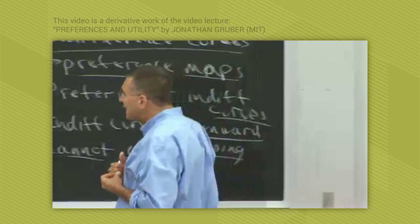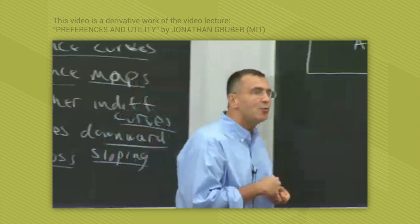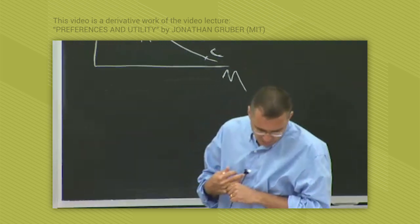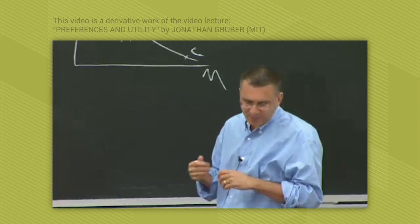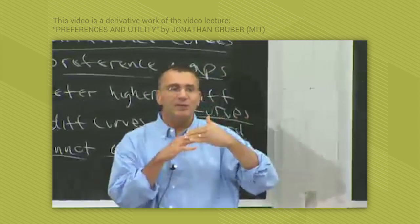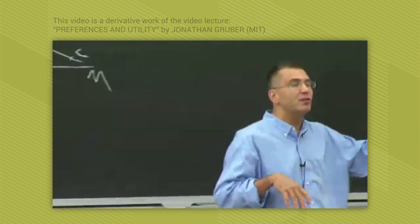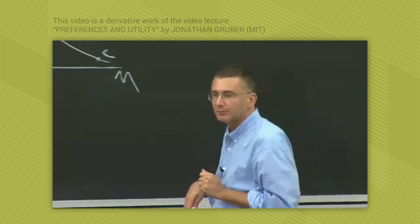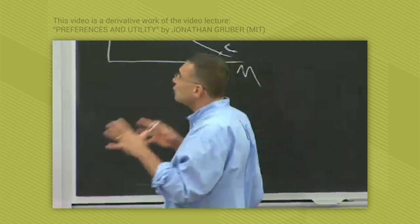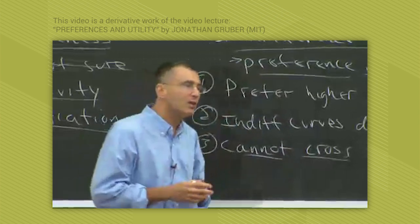And finally, completeness, which is the most awkward of these assumptions, simply means you can't have more than one indifference curve through a point. Every possible bundle has one indifference curve. You can't have two indifference curves through it saying you're not sure which you're on or how you feel about it. You know how you feel—there's one indifference curve through every bundle. This is the way we think about preference maps, which is the core building block of utility theory.